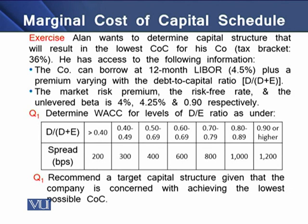Now we have an exercise to understand break points and the marginal cost of capital schedule. It says that Alan wants to determine the capital structure that will result in the lowest cost of capital for his company, which is in the tax bracket of 36%. Alan has access to the following information: the company can borrow at 12-month LIBOR, which is 4.5%, plus a premium varying with the debt-to-capital ratio. The market risk premium, risk-free rate, and unlevered beta are 4%, 4.25%, and 0.90 respectively.